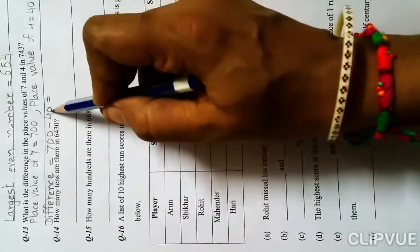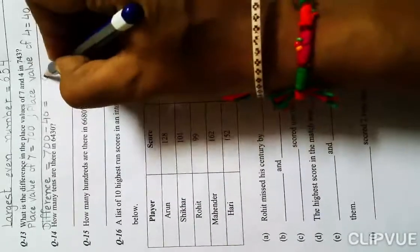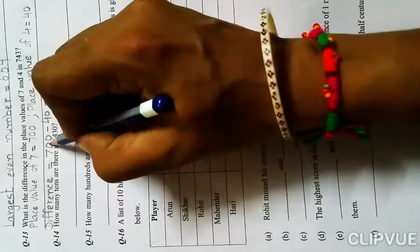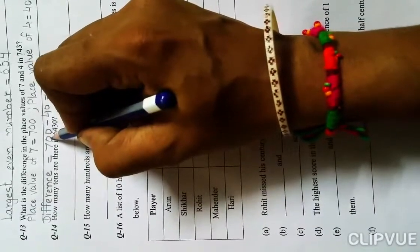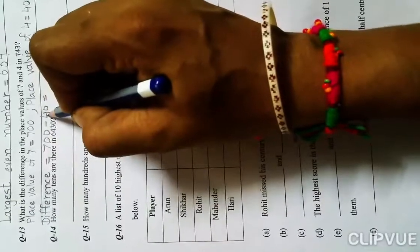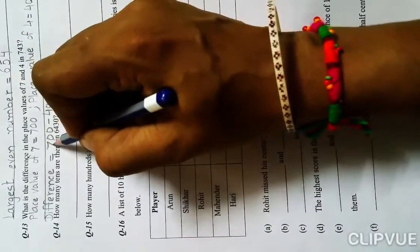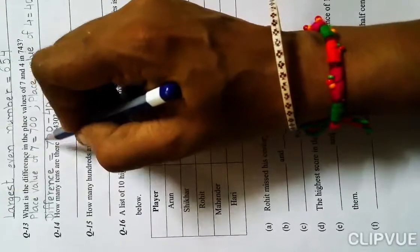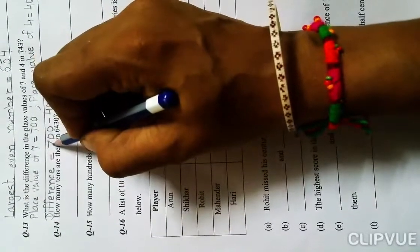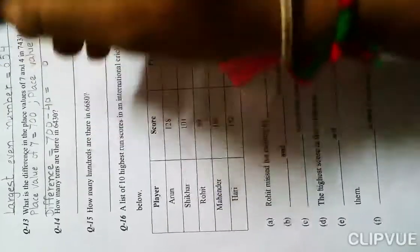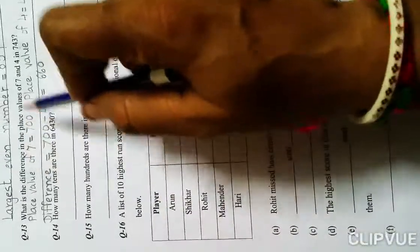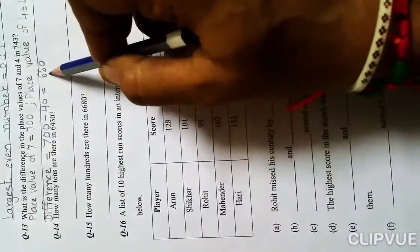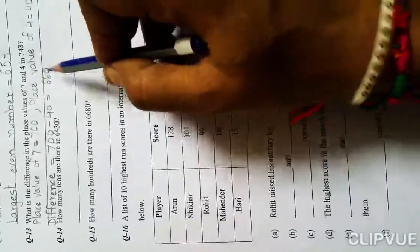Difference equals 700 minus 40. We start subtraction from ones place: 0 minus 0 equals 0. Tens place: 0 minus 4, but zero is smaller so we can't subtract directly. We borrow from the 7. If 7 gives 10, it becomes 6, so 10 minus 4 equals 6. The difference is 660.